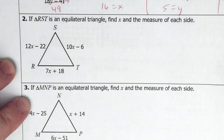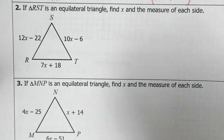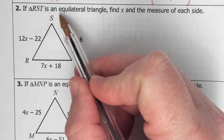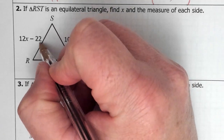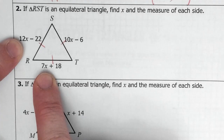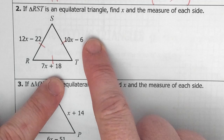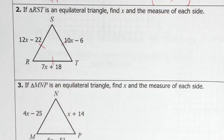We're on page four and I want you to try number two — you should pause and give that a try. So we have this equilateral triangle. What does that mean? That means all the sides are equal — this, this, and this are equal. That means we have a bunch of different options. We could say these two are equal and solve, or these two are equal and solve, or these two are equal and solve. It doesn't matter which one you do — you're still going to get the same answer.